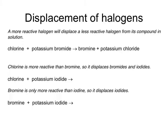As a more reactive halogen will displace a less reactive halogen from its compound in solution, this tells us that the more reactive halogens are at the top of the group. For example, chlorine will displace bromine from a solution of potassium bromide, leaving bromine and potassium chloride. In symbols: Cl2 reacts with 2KBr to make Br2 and 2KCl. This balances because there are two chlorines on the left and two on the right, two potassiums, and the bromines are balanced.